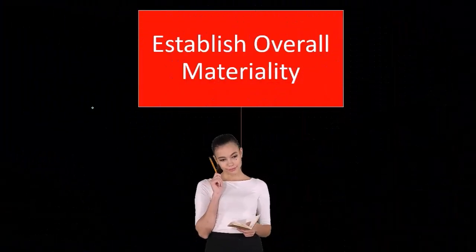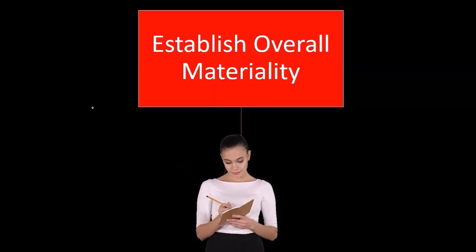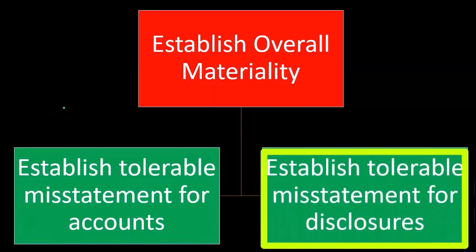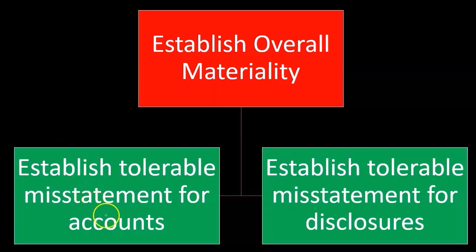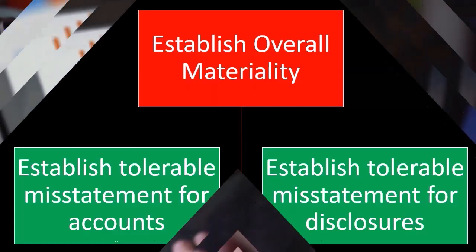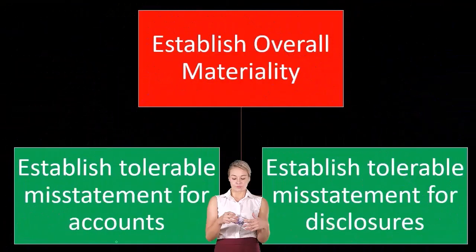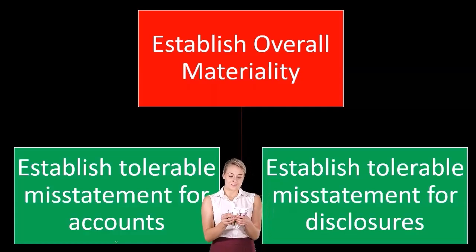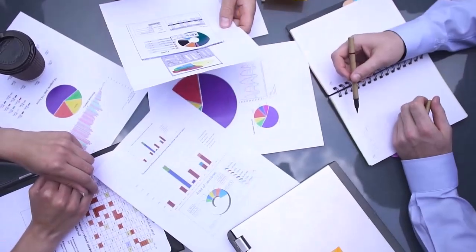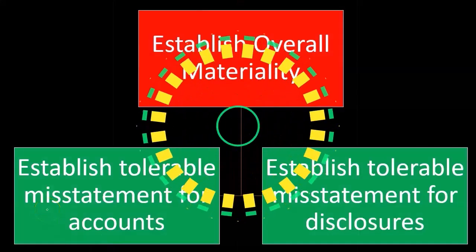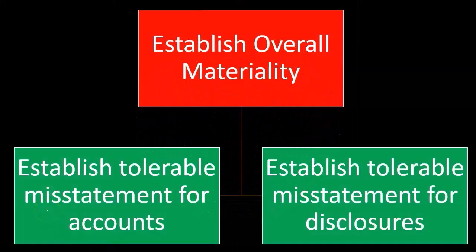To do that, we have to establish things like the overall materiality. We have to establish tolerable misstatement of accounts and tolerable misstatement of disclosures. When we think about what would be a reasonable material misstatement that would be tolerable and acceptable — something where if the financial statements were misstated up to this degree they would not be materially misstated — we consider that per account. So we establish tolerable misstatements for accounts, and then as we start to audit those accounts we will have a tolerance.